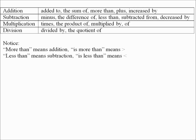With addition: added to, the sum of, and so on. Subtraction: minus, the difference of, and so on. Multiplication: times, multiplied by, even the word 'of' for multiplication. Division: divided by, the quotient of. Notice, however, more than means addition, while 'is more than' is the greater than symbol. And less than means subtraction, while 'is less than' is the less than symbol. We will not be using the less than or greater than symbols — we will only be doing addition and subtraction.